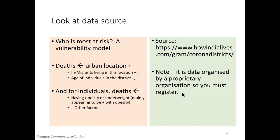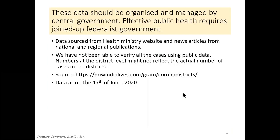Now I'm going to list our data sources very quickly. The deaths data came from howindialives.com, also known as the Joe data set. It's a private firm gathering data from different states and national outlets in a proprietary way. The national outlets give the same basic figures. Their data were sourced from health ministry websites and news articles, and they did checks to make sure there wasn't double counting, making subtractions where they found double counting in a state or district.